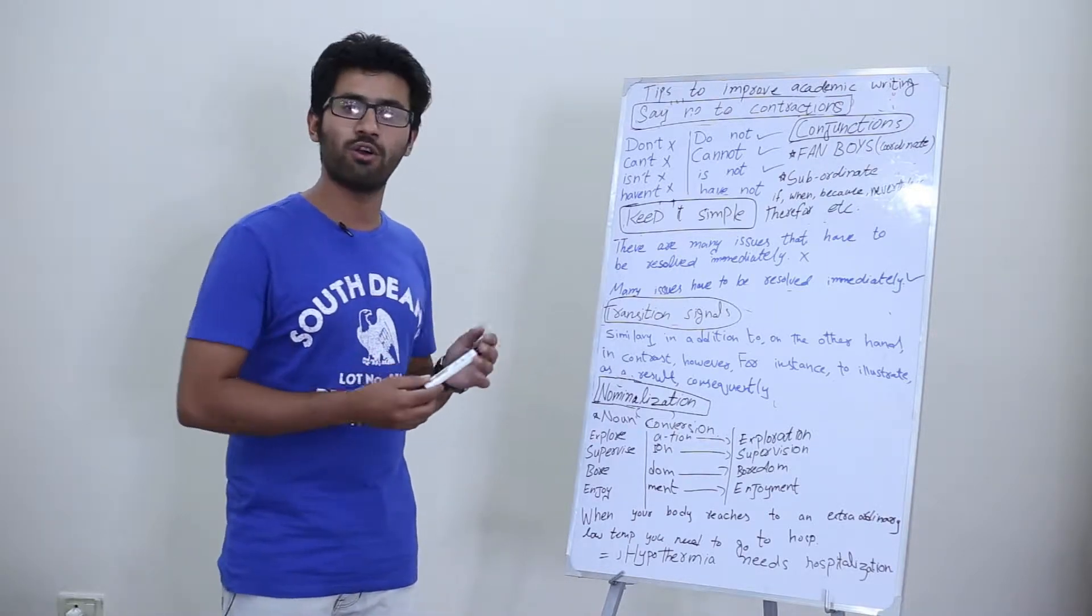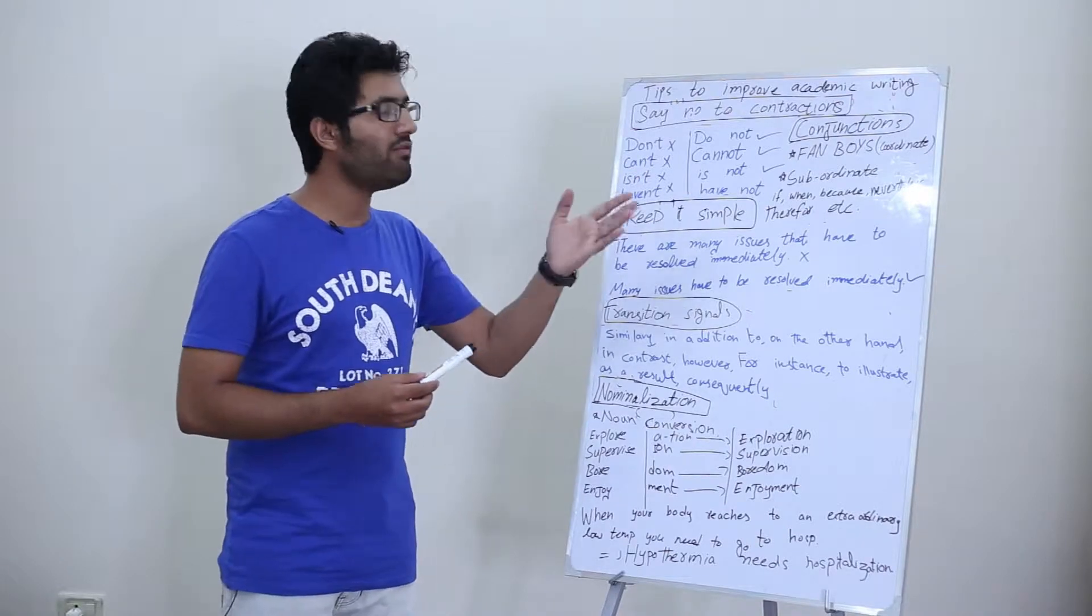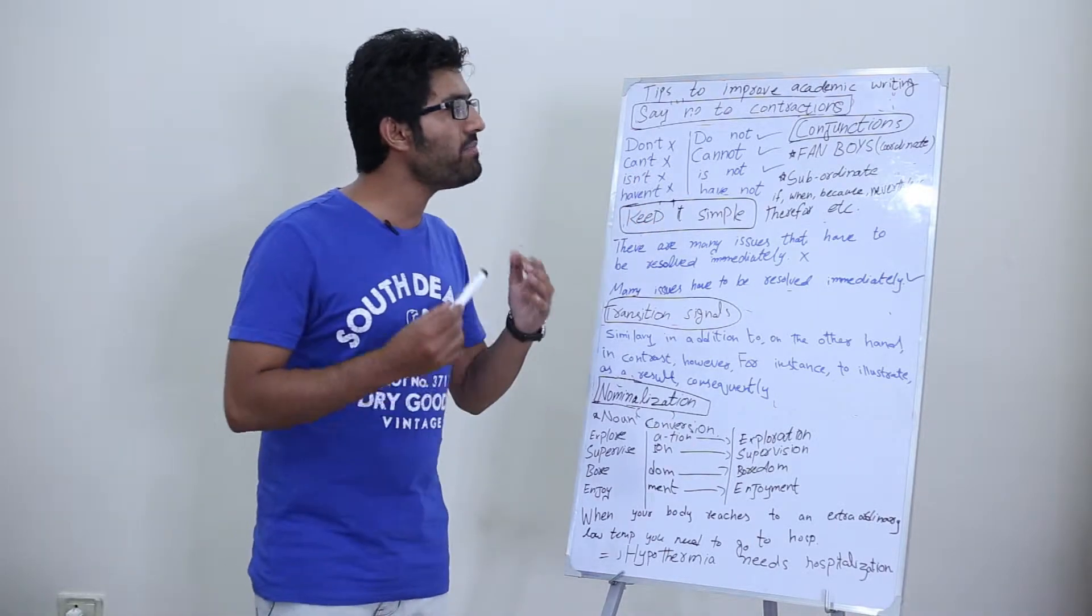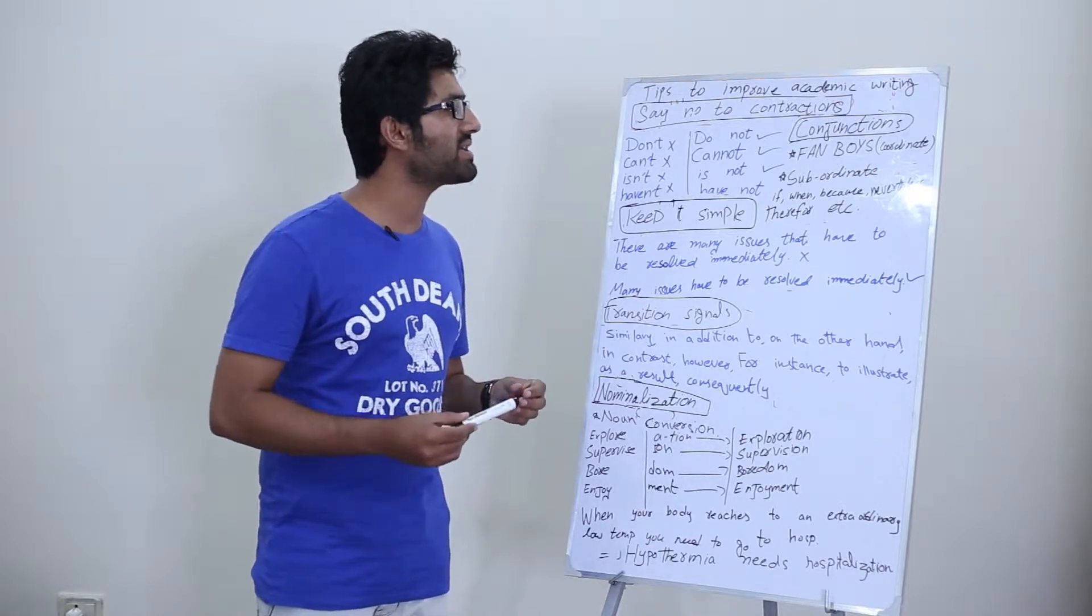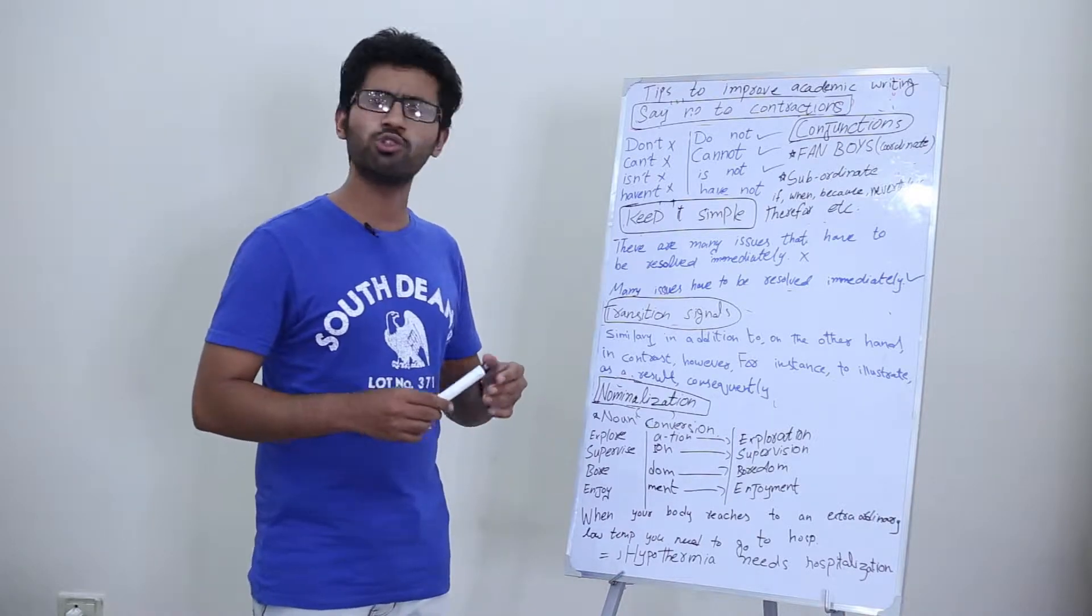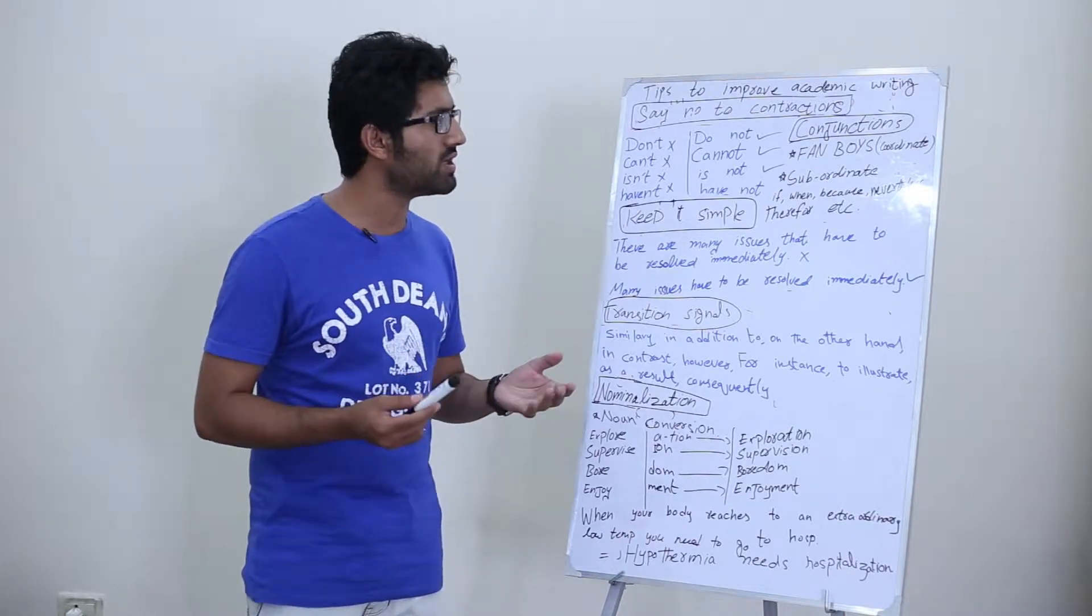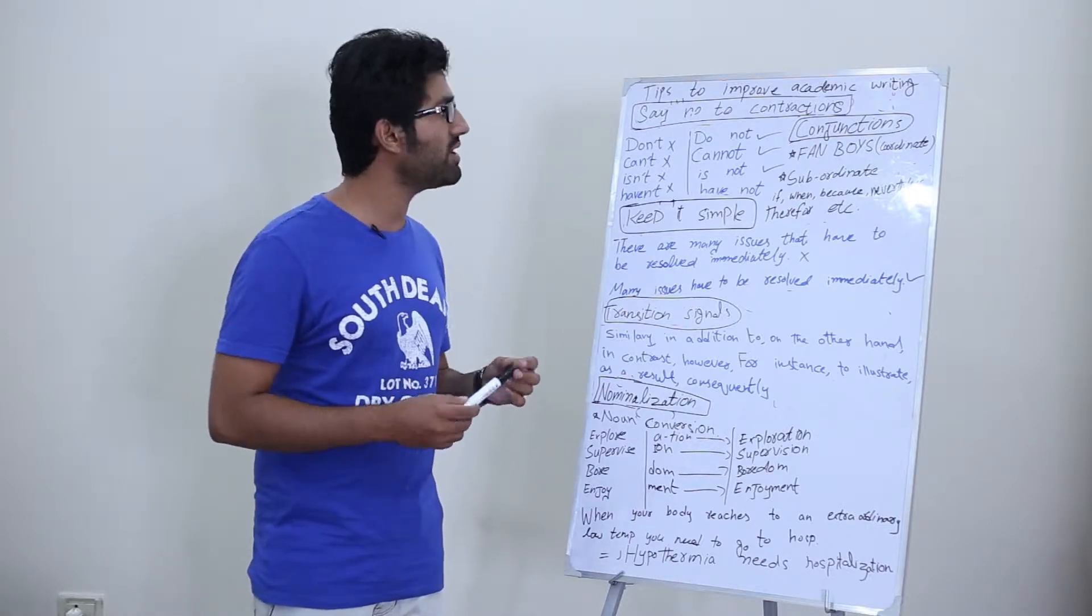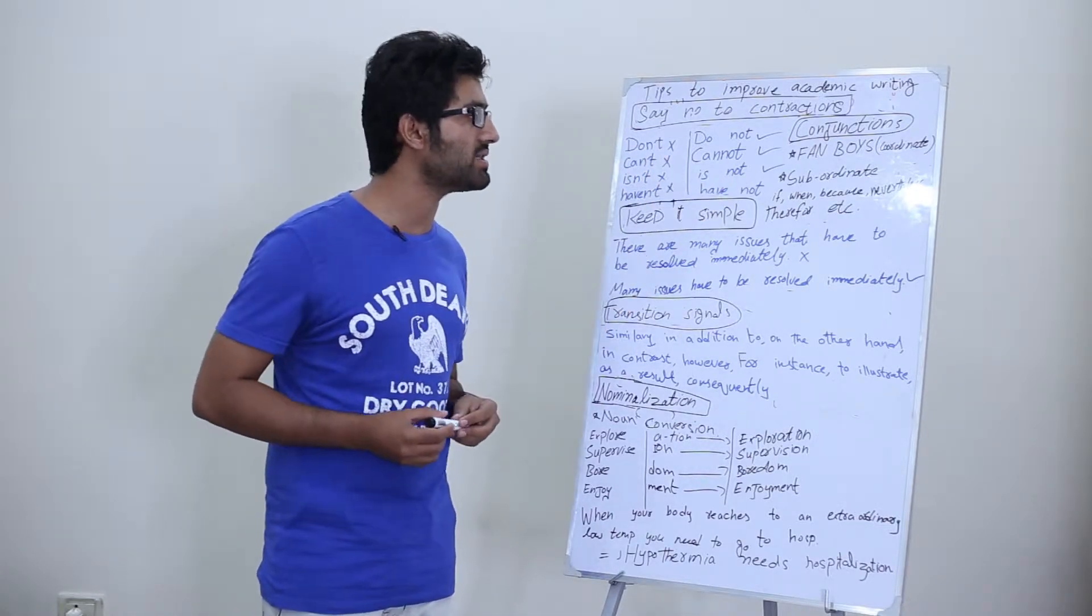The next one is conjunctions. Keep yourself updated with the facts and the uses of different conjunctions. Conjunctions are used to join words and you should have complete knowledge of how to use them. For example, FANBOYS coordinate conjunctions and subordinate conjunctions.